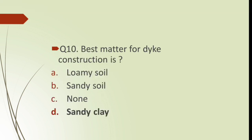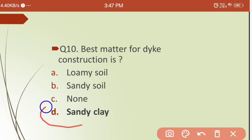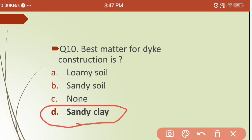Tenth question: what is the best material for dyke construction? Options are: (a) loamy soil, (b) sandy soil, (c) none, (d) sandy clay soil. The answer is sandy clay soil — it is the best material for dyke construction because of its low porosity.